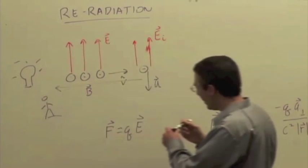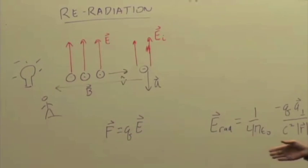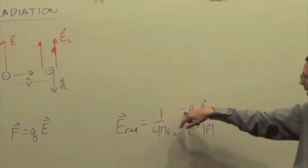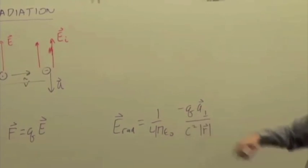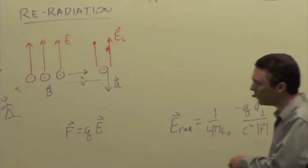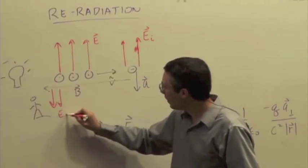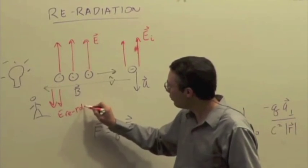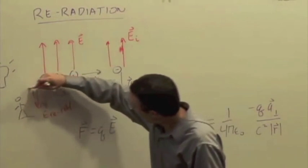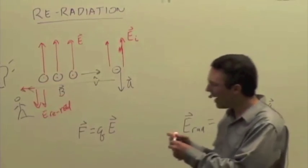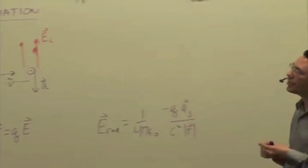And A perpendicular is downward. And so we have negative times a negative times A perpendicular. And so eventually we'll see some re-radiation, propagating in that direction back towards us. And in lots of other directions as well.